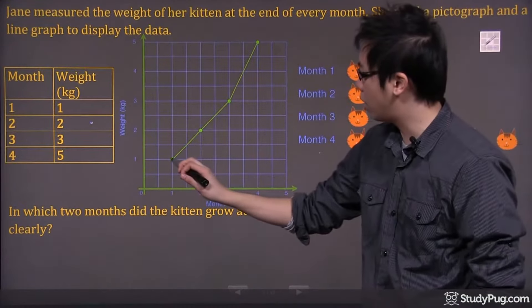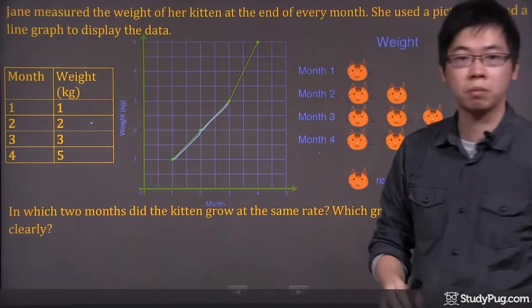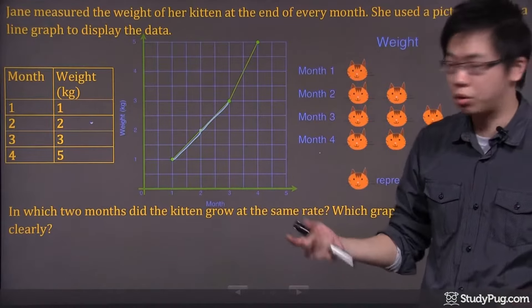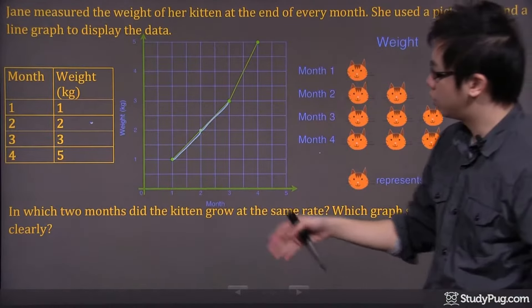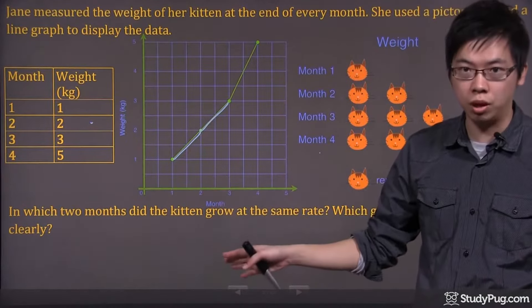I can see that this slope right here, the steepness of the graph, is exactly the same as this steepness over here. That means those two intervals will have the same growth, which is the same rate. That's between month number two and month number three.